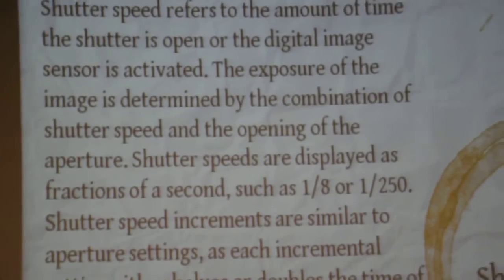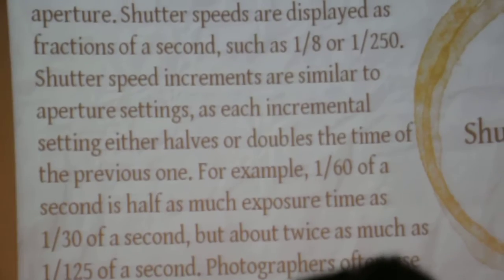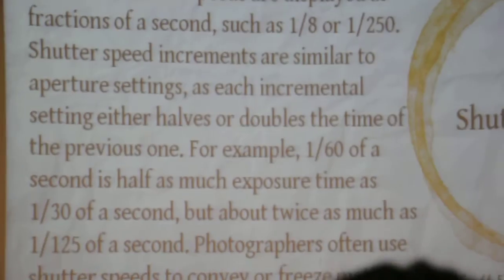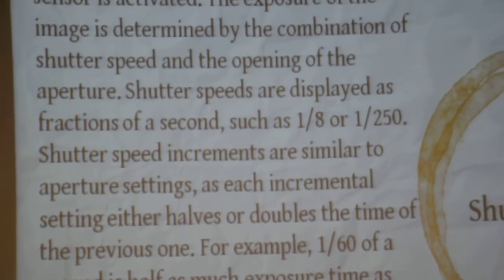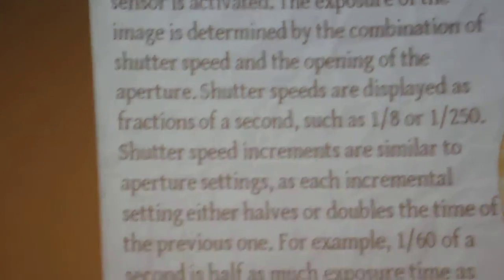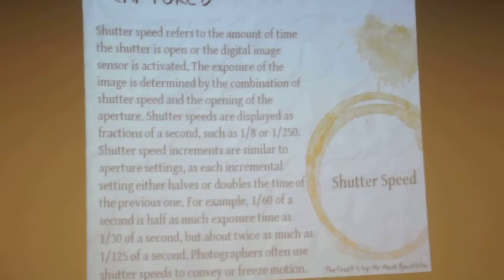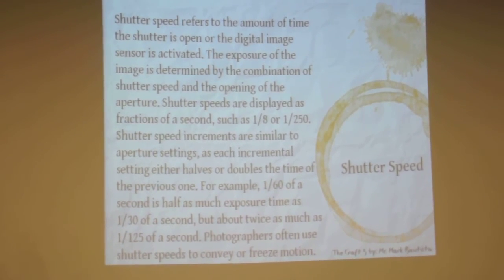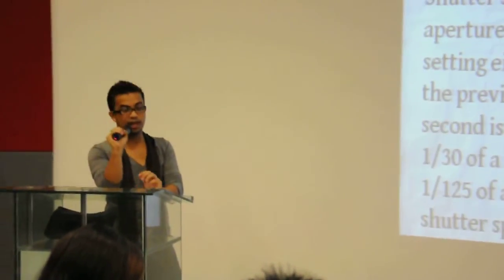Connected to shutter is the shutter speed. Shutter speed refers to the amount of time the shutter is open, or the duration the digital image sensor is activated. The exposure of the image is determined by the combination of shutter speed and the opening of the aperture — they go hand in hand. The larger the aperture, the more light is allowed to pass through the lens. And the larger the numerical value of the f-stop, the smaller the opening of the lens.